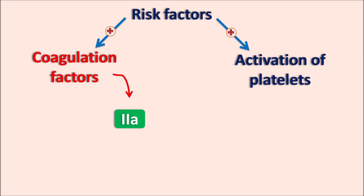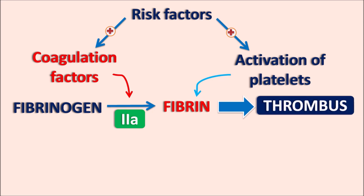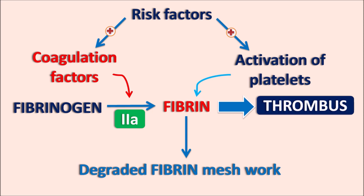Thrombin has various actions in thrombus formation, but one of the important actions is the conversion of fibrinogen into fibrin. Fibrinogen is the precursor for fibrin, and by the action of thrombin, fibrinogen is converted into fibrin, which is the active form. This fibrin forms a meshwork and can incorporate the aggregated platelets and other blood cells. The fibrin mesh forms a cross-linkage which is stabilized by factor XIIIa. By activation of the coagulation pathway as well as the platelets, a dense fibrin meshwork is formed which produces an abnormal clot — the thrombus.